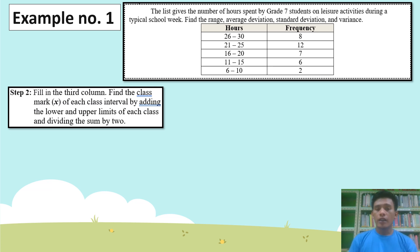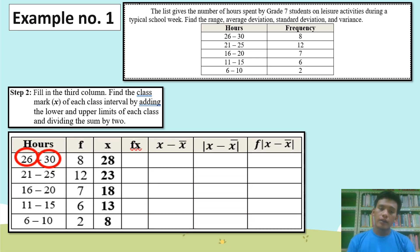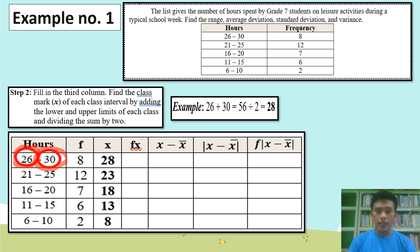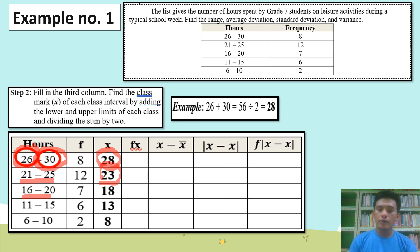Step 2: Fill in the third column. Find the class mark X of each class interval by adding the lower and upper limits of each class and dividing the sum by 2. So for the interval 26 to 30: 26 plus 30 equals 56, divided by 2, that will be 28. For 21 to 25: 21 plus 25 equals 46, divided by 2, that is 23. For 16 to 20: 16 plus 20 equals 36, divided by 2, that is 18. For 11 to 15: 11 plus 15 equals 26, divided by 2, that will be 13. For 6 to 10: 6 plus 10 equals 16, divided by 2, that is 8.